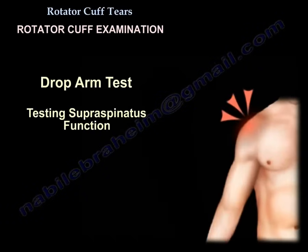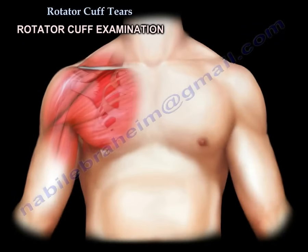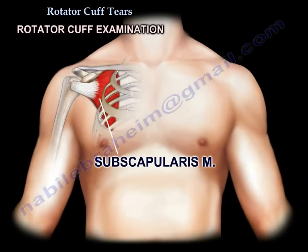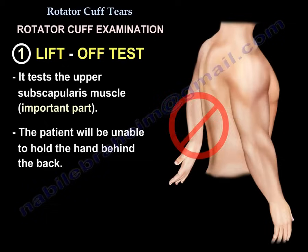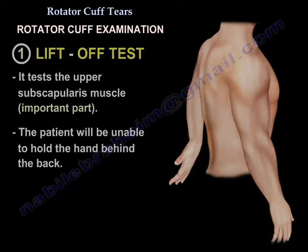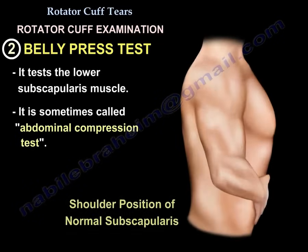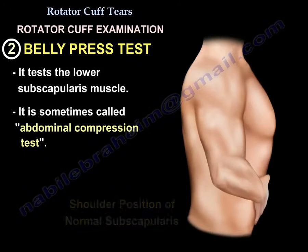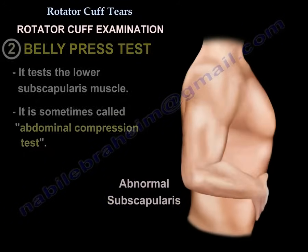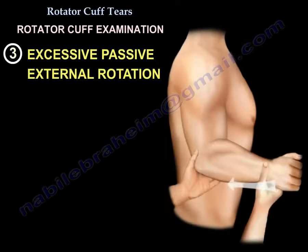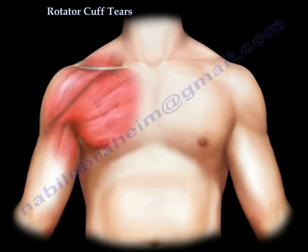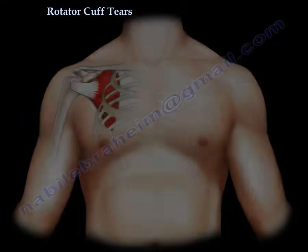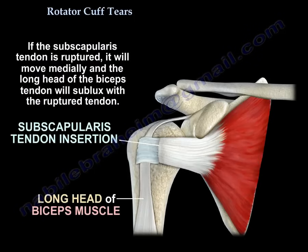For the subscapularis, there are at least three tests. Number one is the liftoff test, which tests the upper subscapularis — the patient is unable to hold the hand behind the back. Number two is the belly press test, also called the abdominal compression test, which tests the lower subscapularis. Number three is excessive passive external rotation. When the subscapularis is torn, it typically pulls the bicep tendon medially — please check for that.